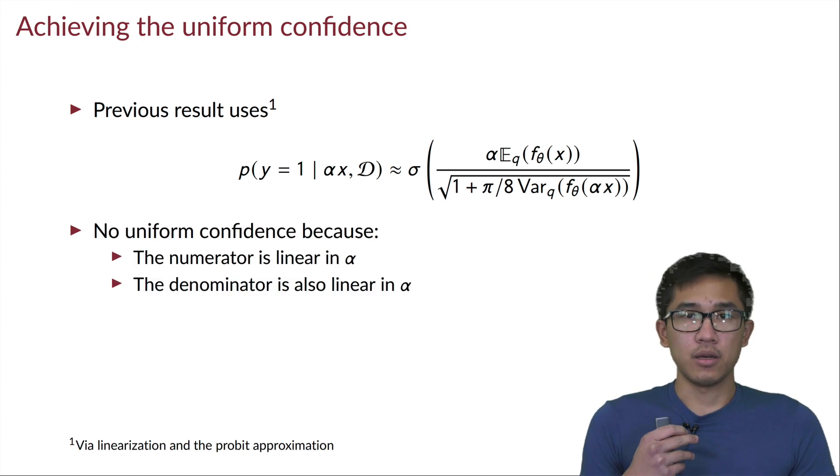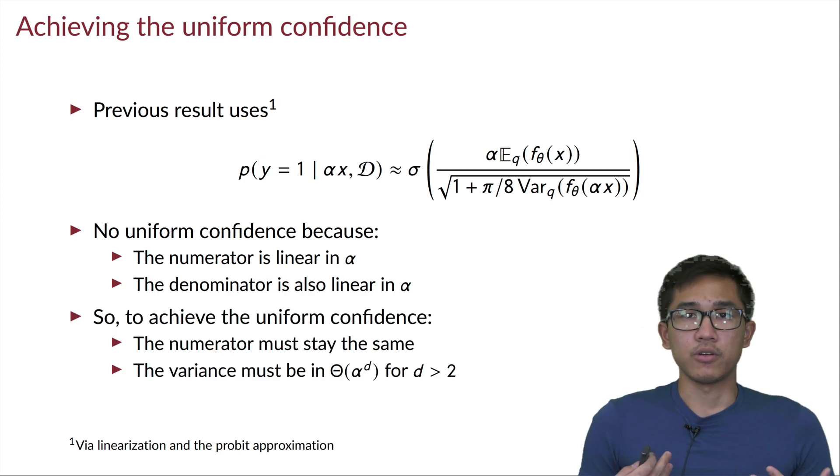And notice that inside this sigmoid function we have an expression where both the numerator and the denominator are linear in α. And so when we take the limit of α tends to infinity, inside of this sigmoid function we have a constant and not necessarily zero, and so we don't have the uniform confidence.